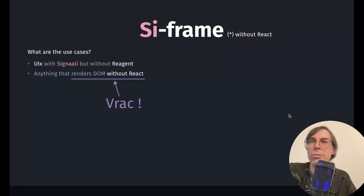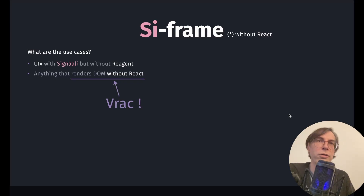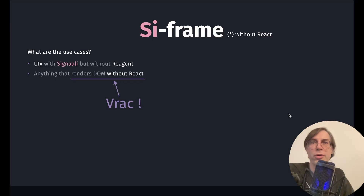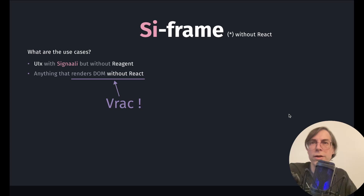I happen to have such a library — it's VRAC, which can now use ReFrame via the C-Frame fork. VRAC is already updating the DOM based on Signali's Reactive Nodes, and because C-Frame subscriptions are actually Signali's Reactive Nodes, there is absolutely nothing to change in VRAC to make them work together.